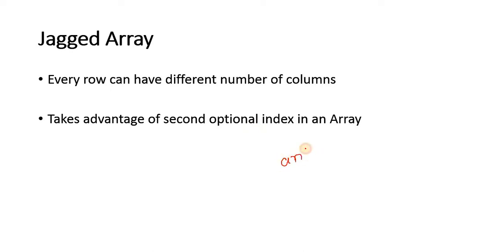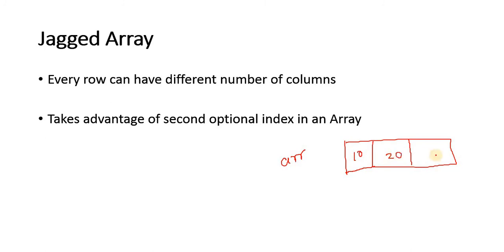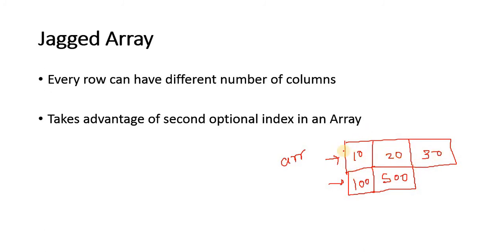A jagged array can be denoted like this. ARR is an array which consists of two rows, but in the first row we have three columns containing 10, 20, and 30, and in the second row we have only two columns containing 100 and 50. We have two rows but each row has a different number of columns — this kind of array is called a jagged array.